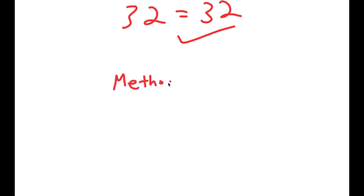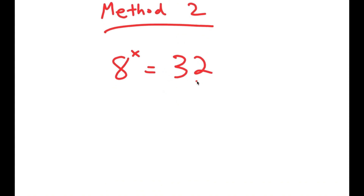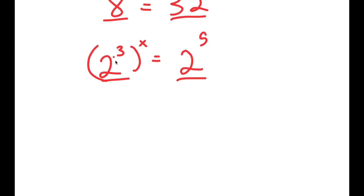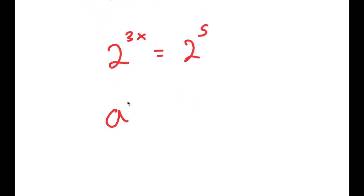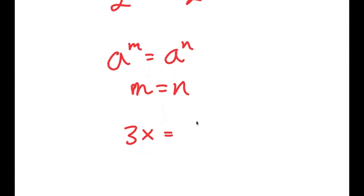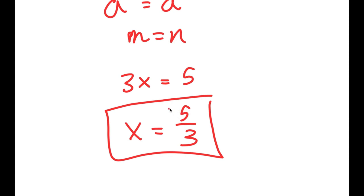There's also a simpler second method. Starting with 8 to the power of x equals 32, rewrite 8 as 2 to the power of 3 and 32 as 2 to the power of 5. Then 2 to the power of 3 to the power of x equals 2 to the power of 3x, which equals 2 to the power of 5. Since the bases are the same, 3x equals 5, and x equals 5 over 3.